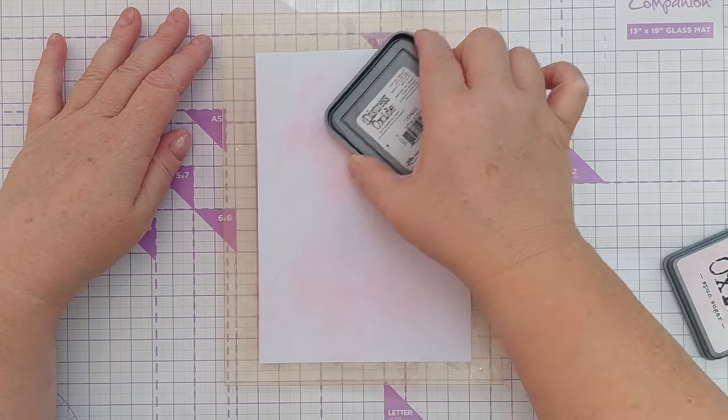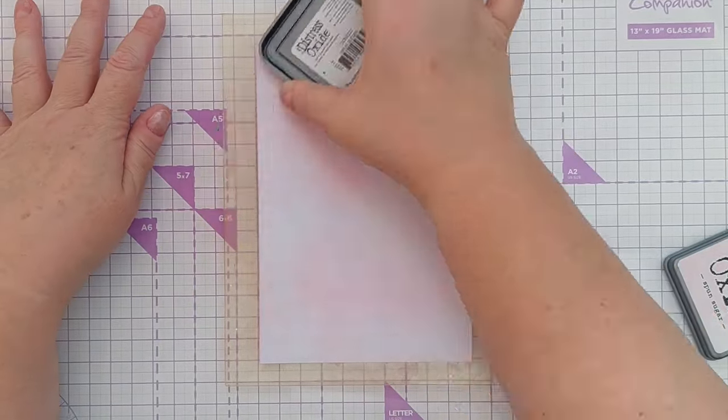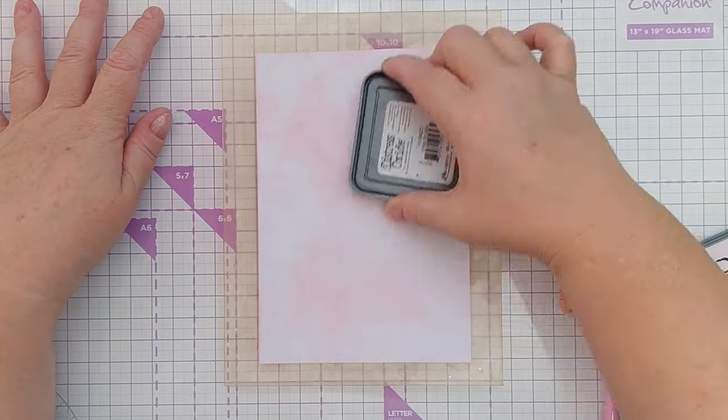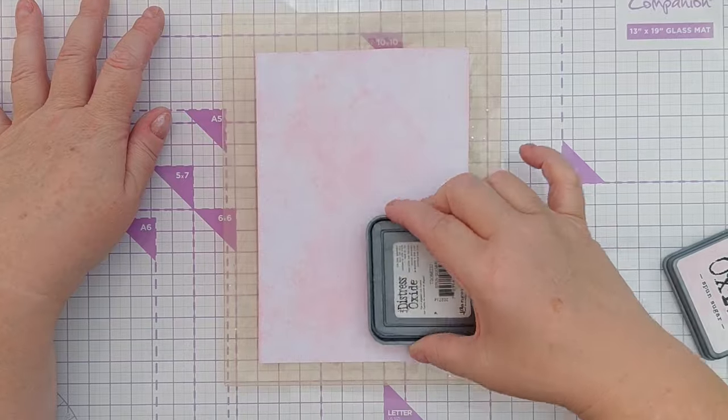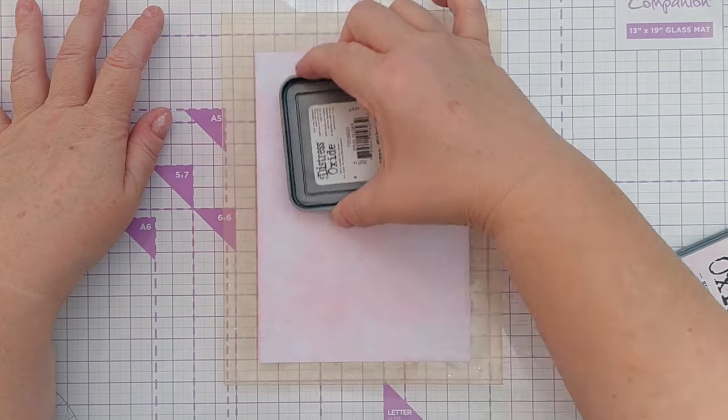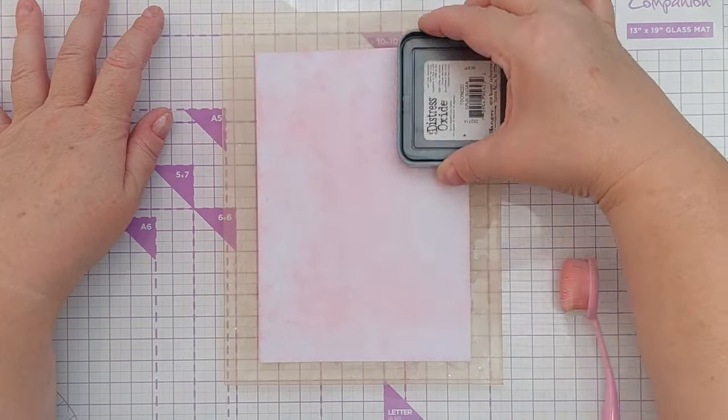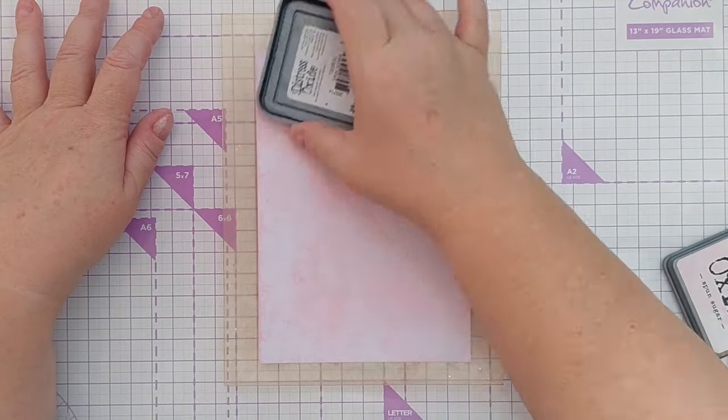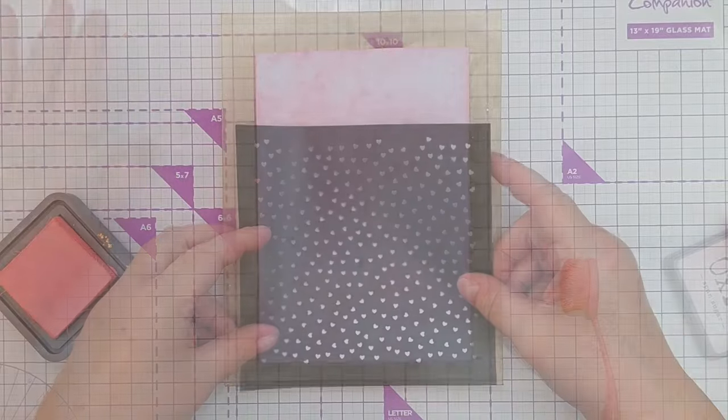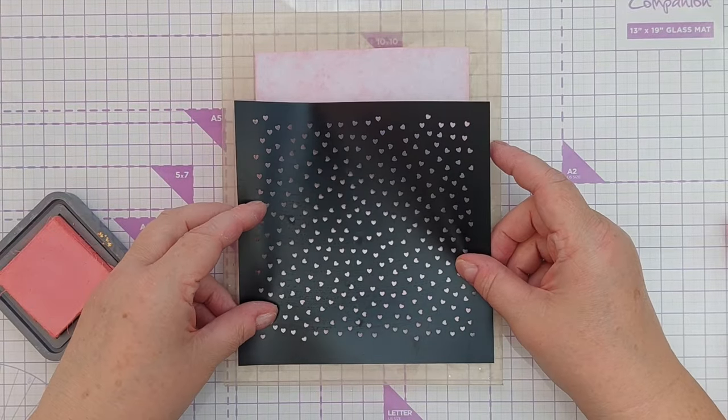First let's look at the mixed media piece. To start with I placed a piece of smooth white card on my grid mat and then took spun sugar distress oxide ink and swiped the ink pad over the paper. Spun sugar is a very light color so it takes some work to build up a visible layer but I find swiping is much quicker than using a blending brush with this color.